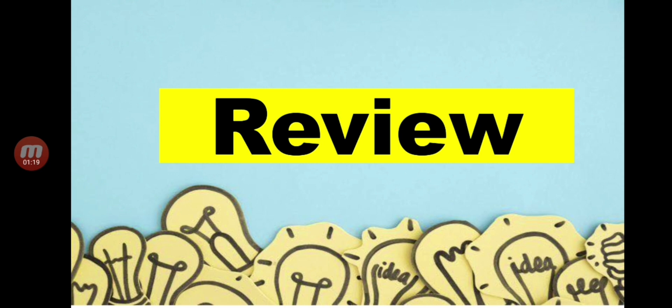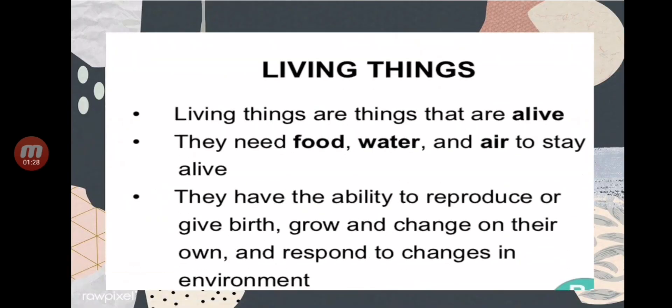Let's have a review about plants. Let's start now. First, with living things — what are living things? Living things are things that are alive. When we say alive, it means they have life. And since they are living things, they need food, water, and air to stay alive.